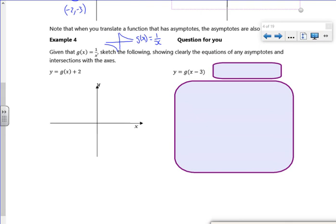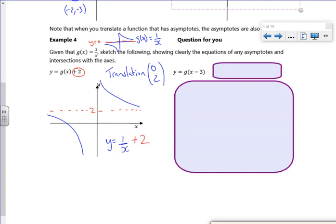So this one's saying move it up two. So my asymptote was there, y equals zero. But now it's moved up two, so I'm going to put a dotted line on. And then the graph is there. So that's a translation of zero over two. I've got one over x, but I've lifted it up by two, so I'm putting a plus two on the end there.